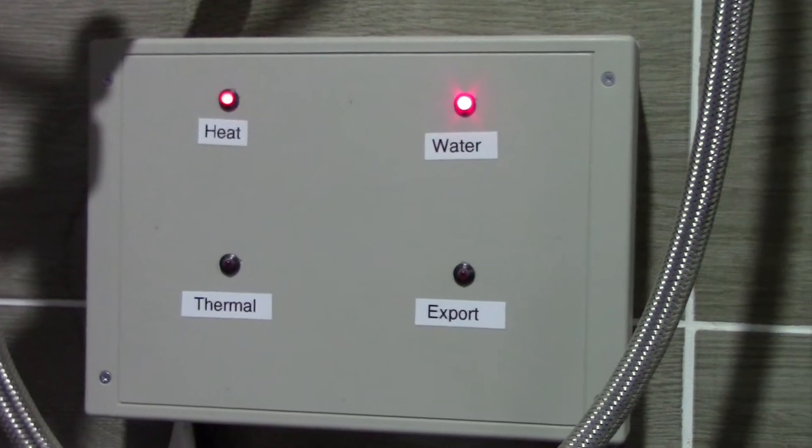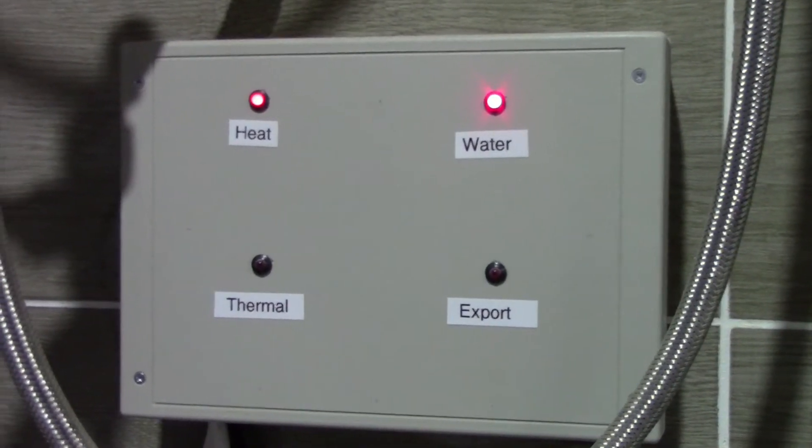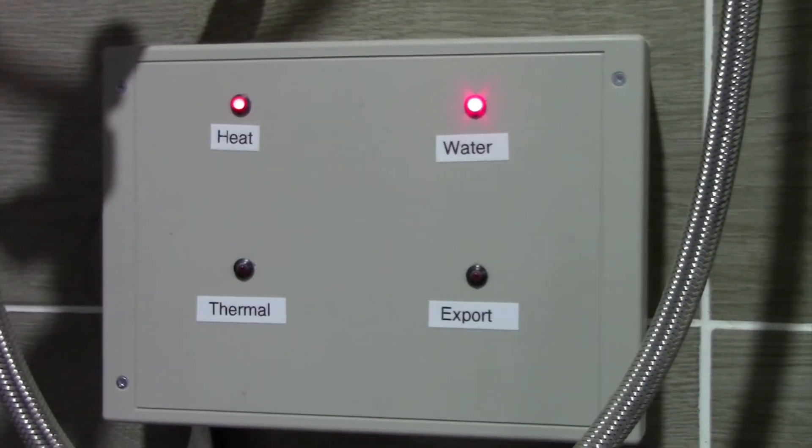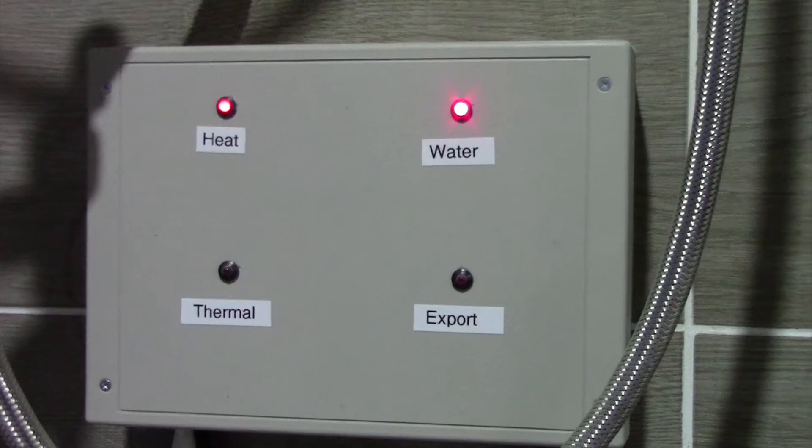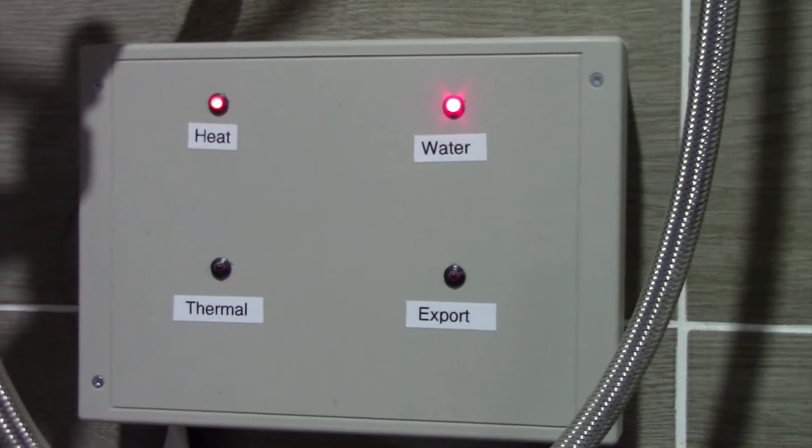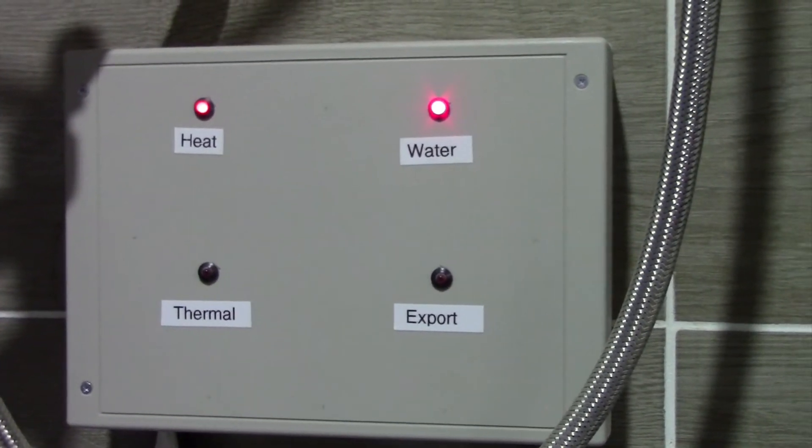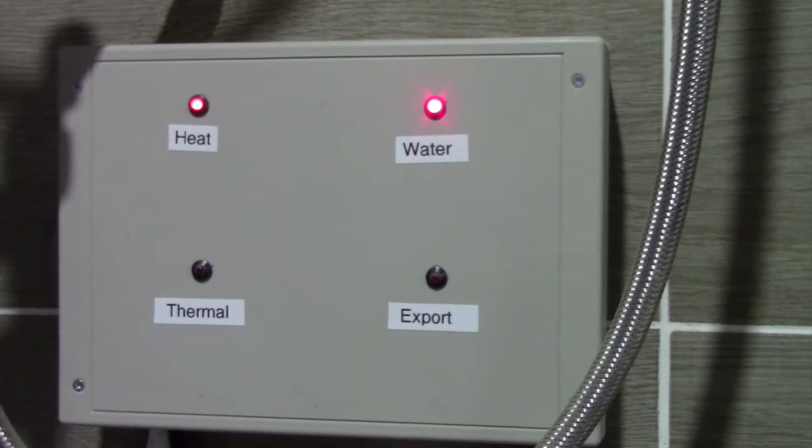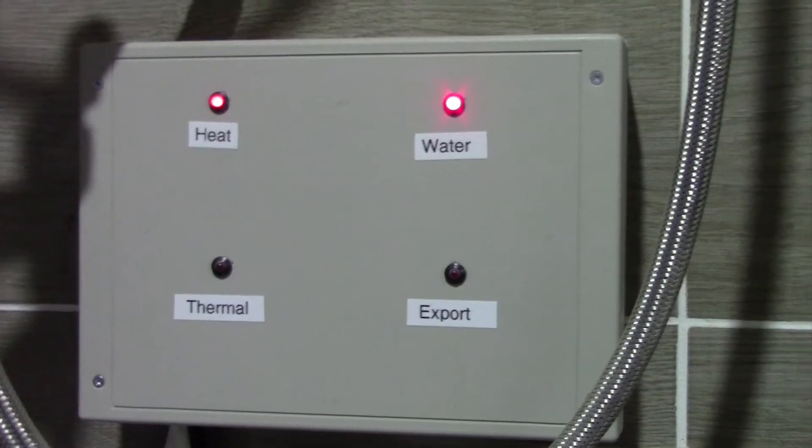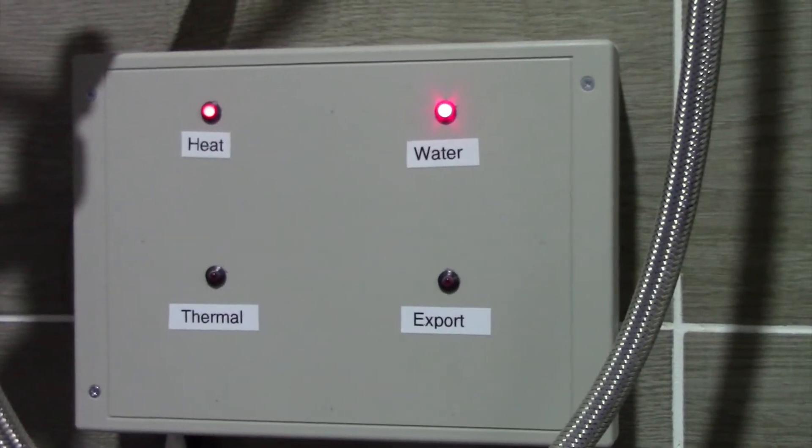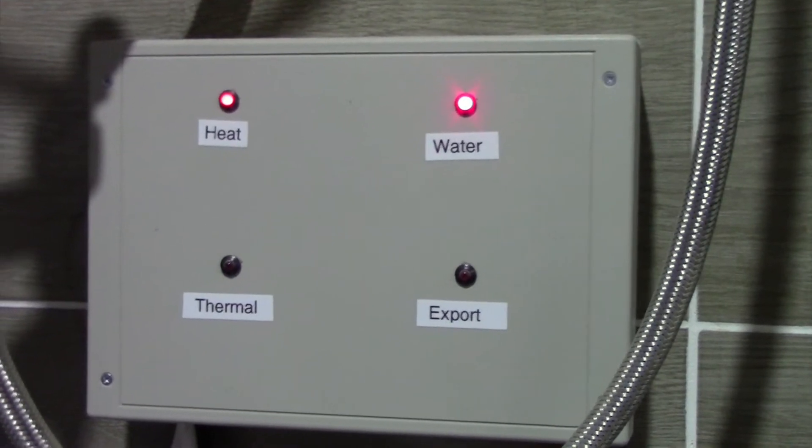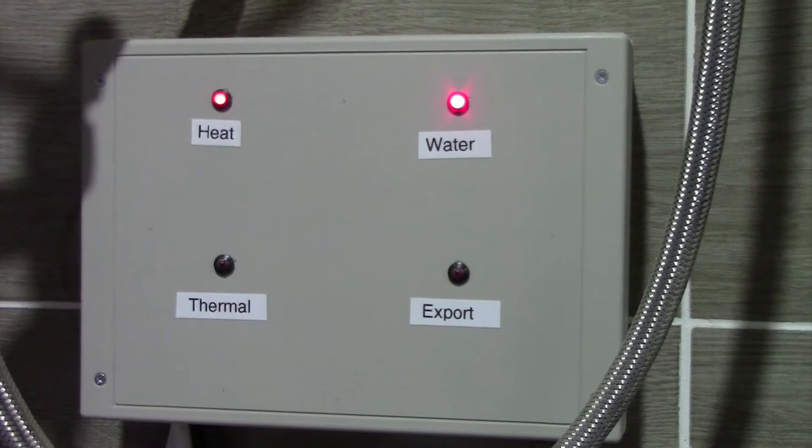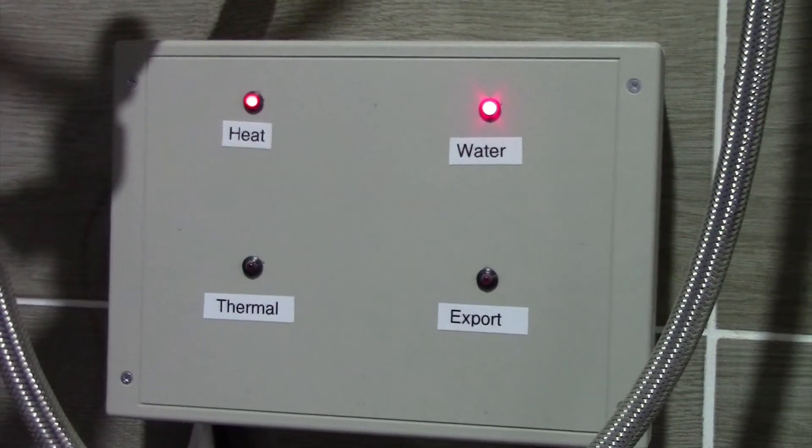They send a signal saying stop, don't turn the boiler on to heat the tank - it's being heated with thermal or export. That way I'm saving money by not using the boiler. Rather than turning it off completely, it's there as backup. On a cloudy day, I don't have to manually turn programs back on. This is fully automated.